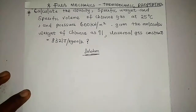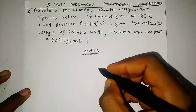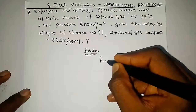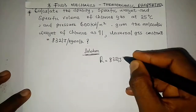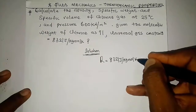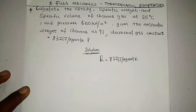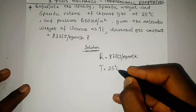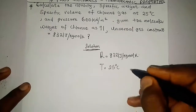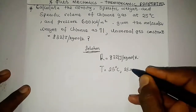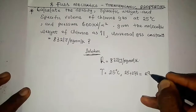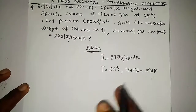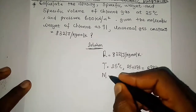Let's write out the parameters given in the question. The universal gas constant, which I represent as large R, is 8321 joule per kilogram per mole per kelvin. The temperature given is 25 degrees Celsius, which converting to kelvin gives 25 plus 273 equals 298 kelvin. The molecular weight of chlorine, large M, is 71.